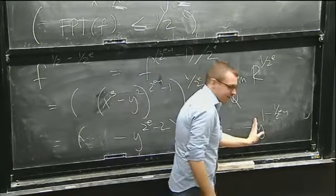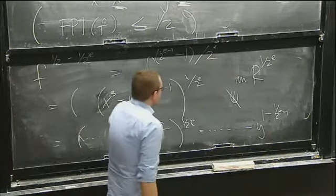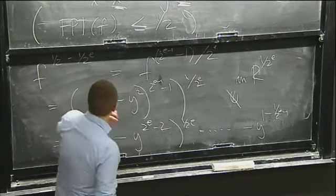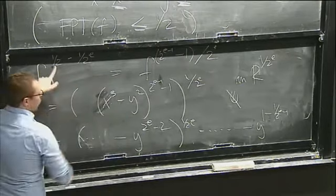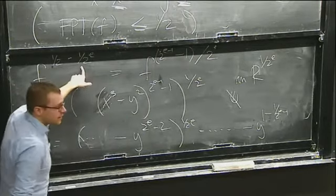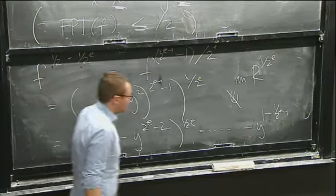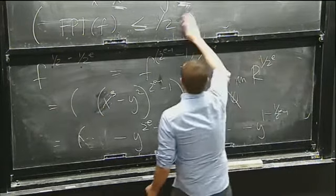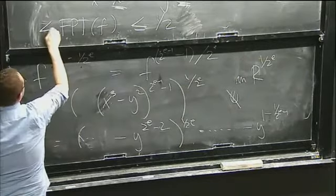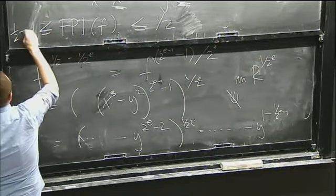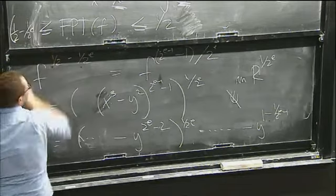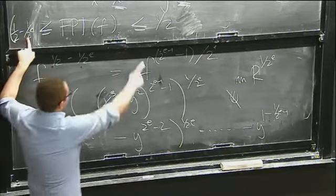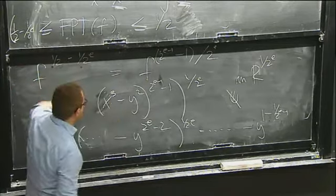The 1 here is my component function. This says that the F-pure threshold is at least this big — at least 1/2 − 1/2^e for all e. The conclusion is that this threshold is at least 1/2 − 1/2^e, and if I let e go to infinity, I sandwich this in between, and it has to equal 1/2.